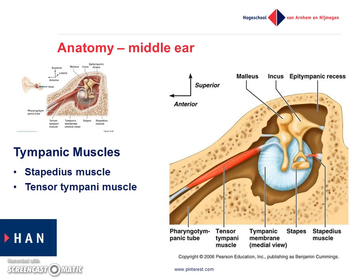Now more detail about the tensor tympani muscle. This is the tensor tympani muscle — it arises from the anterior wall of the middle ear space, superior to the orifice of the pharyngotympanic tube — also called the Eustachian tube. The muscle inserts into the upper manubrium of the malleus. When this muscle contracts, it pulls the malleus anteriorly and medially — to the front and to the inside of the middle ear.